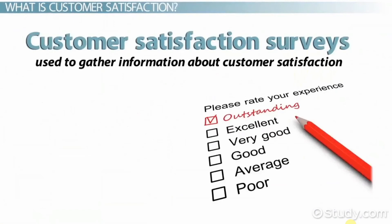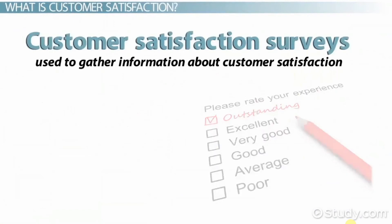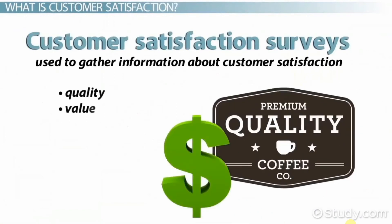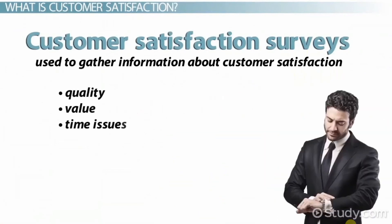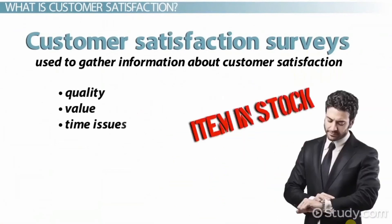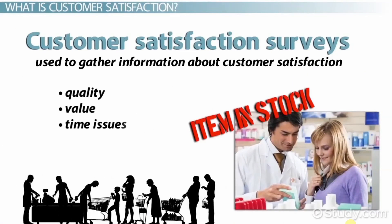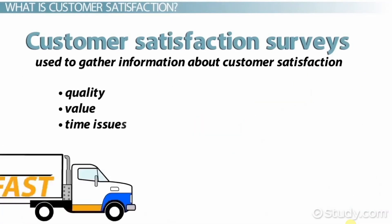Typical areas addressed in the surveys include quality of product, value of product relative to price — a function of quality and price — time issues such as product availability, availability of sales assistance, and time waiting at checkout and delivery time.